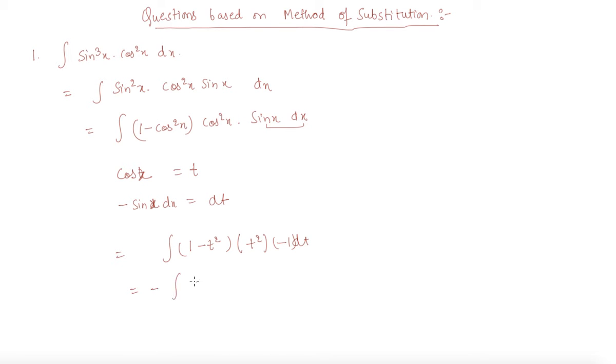Minus I will take outside. This is t square minus t to the 4 dt. To integrate t square, I will get t cube by 3. Plus minus minus plus t to the 5 by 5 plus c.